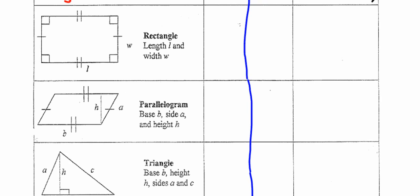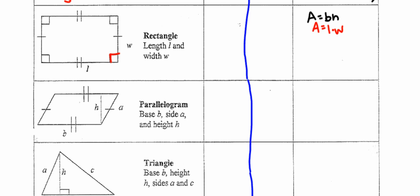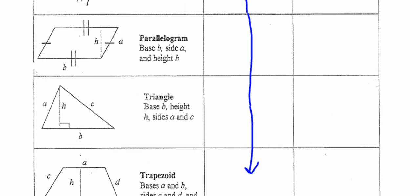For the rectangle, the area is going to be equal to the base times the height. In the case of the rectangle, your base and your height are your length times width, so sometimes you'll see this as area equals length times width. For the parallelogram, once again, area is equal to base times height. Hopefully you're starting to see a pattern develop here.